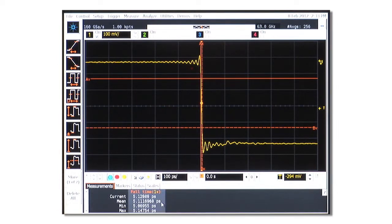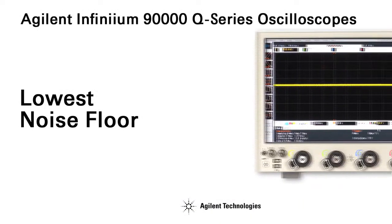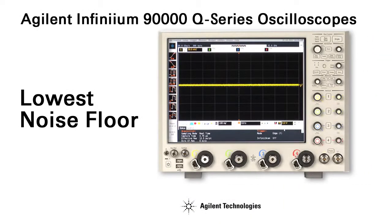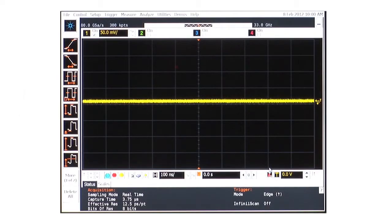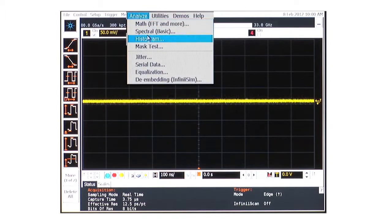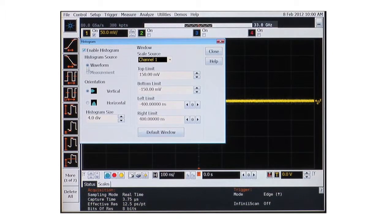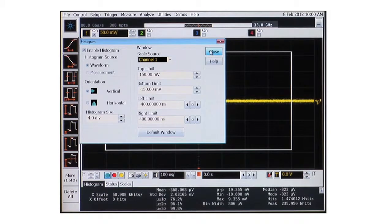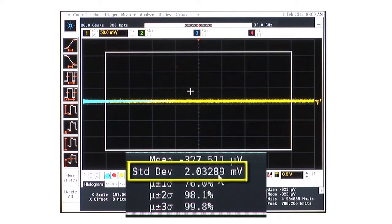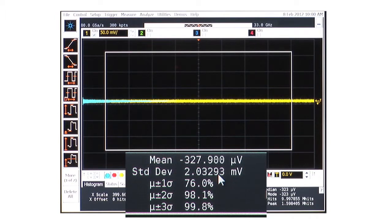In addition to being the world's fastest oscilloscope, the Agilent Q-Series features the industry's lowest noise floor. In this measurement, we're looking at the oscilloscope noise at 50 millivolts per division by simply turning on a histogram of the noise. We see that the Q-Series features a noise floor of 2 millivolts RMS, which is between 20 and 30 percent lower than the same measurement of any other oscilloscope on the market today.